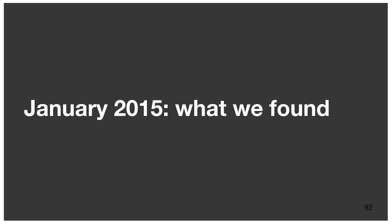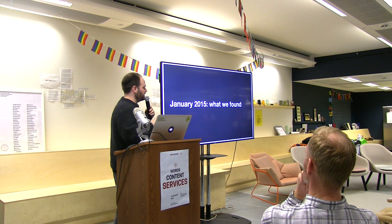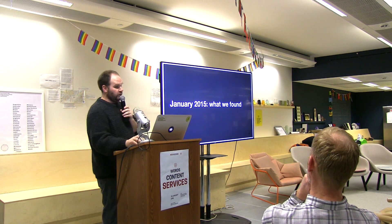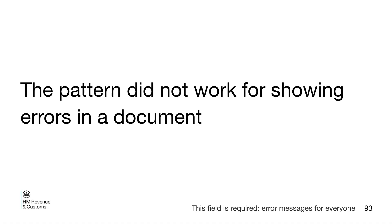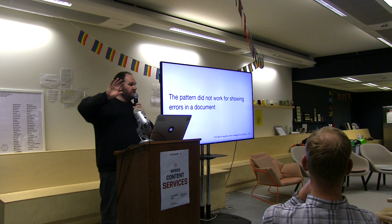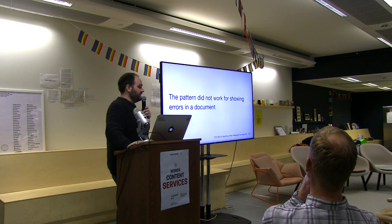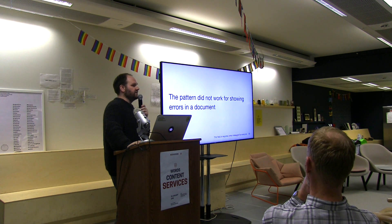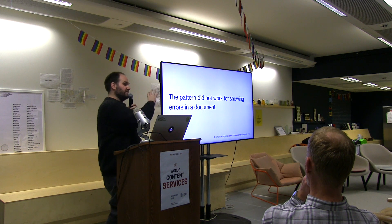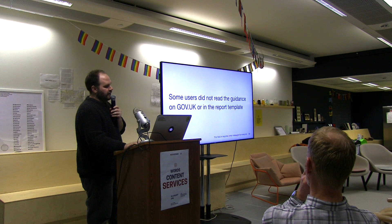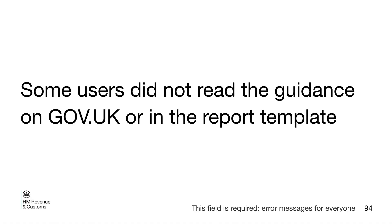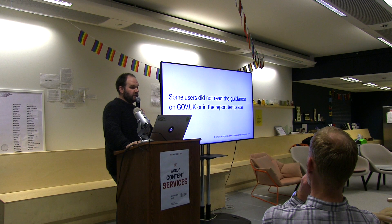In January 2015 we did loads of writing and testing with users, and what we found was the pattern didn't work — like we thought it wouldn't — because we were telling people about something that was wrong in an offline process. When someone did this for real and had 10,000 errors, I'm not sure where we could really show that in the red box pattern. Most users didn't read the guidance, just like we thought they wouldn't, because we had a lot of people who jumped in with both feet rather than spending time reading.